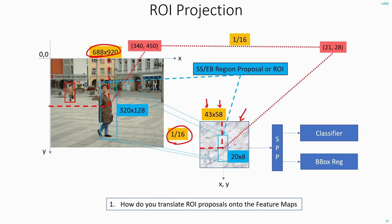And now, if you look at this blue box here, let's say this is the region proposal, ROI proposal given by your selective search or edge box. And the dimension of this box is 320x128. To translate this ROI proposal onto the feature map, you again divide both these dimensions by 16, and you will get 20x8. So now you know the dimension of this bounding box.